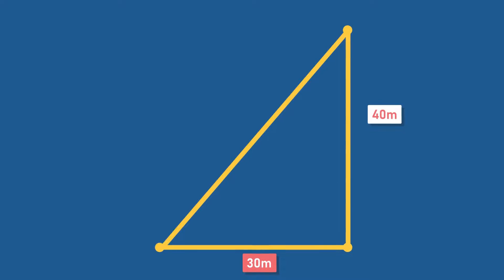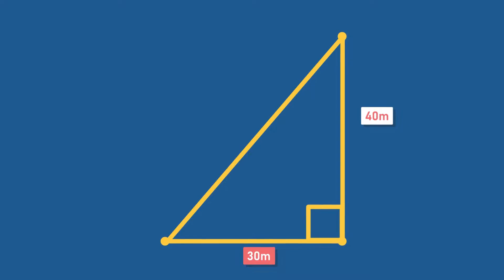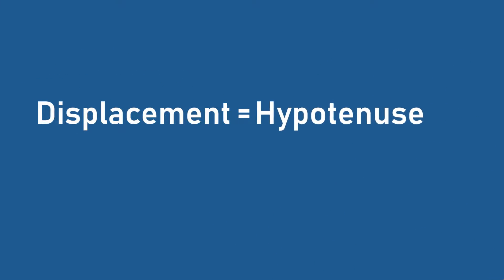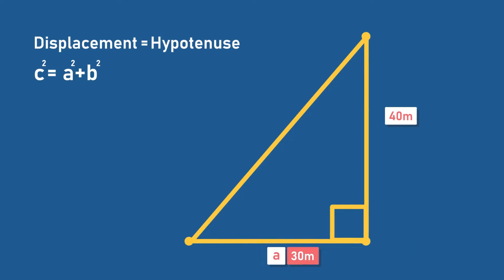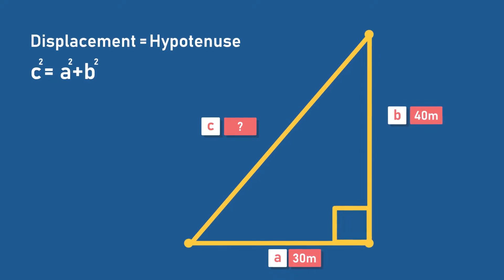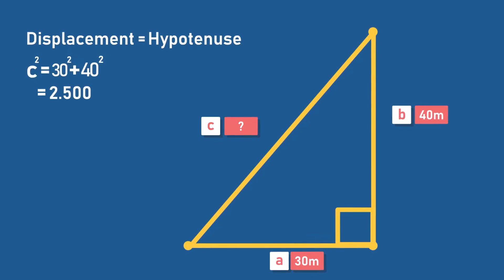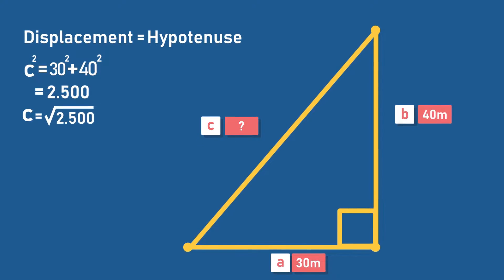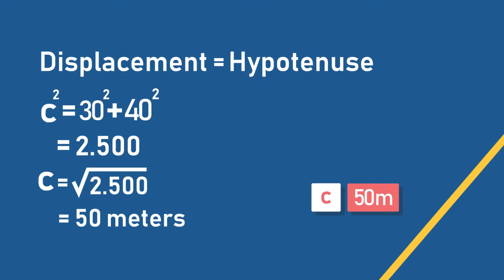If we look at this figure closely, we can see that this path forms a right triangle. Thus we can calculate the displacement by solving the hypotenuse of the triangle using the formula c² = a² + b², where a is the base of the triangle, b is the perpendicular, and c is the hypotenuse. Inserting the values, we get c² = 2,500 meters, so c equals the square root of 2,500, which is equal to 50 meters — much shorter than the actual distance of 70 meters.